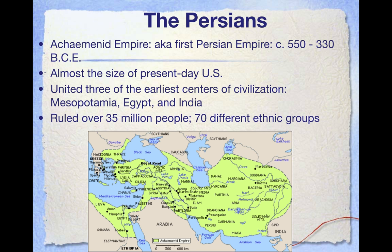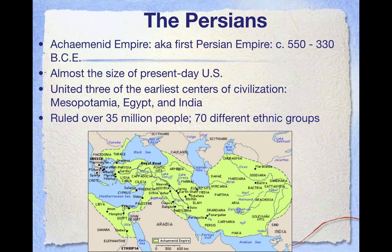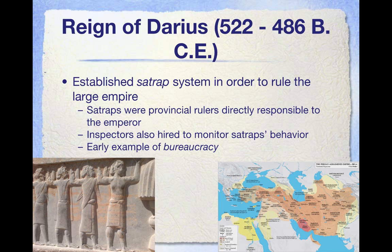The Achaemenid Empire was another name for the earliest part of the Persian Empire. Its size was tremendous — it stretched more than 3,000 miles from the Nile all the way to the Indus River, almost as large as the United States by comparison. This was the largest and most diverse empire the world had seen up until this point. More than 35 million people lived in this area, and there were more than 70 distinct ethnic groups. The people spoke different languages and had different religions, and that diversity is going to shape the way the Persians governed themselves.